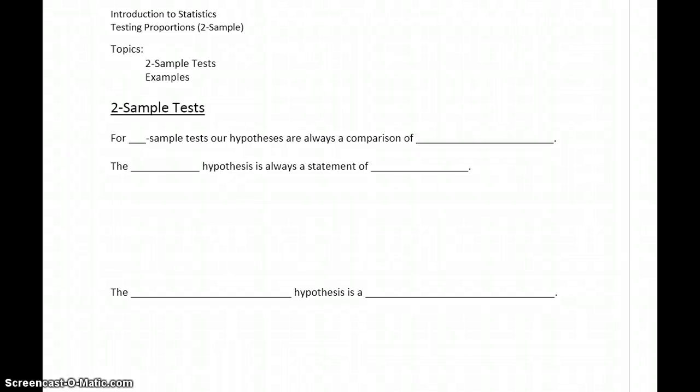We've looked at testing claims about one proportion, now we want to expand on that to test claims about two proportions. For the most part, our process is going to remain very similar to what we did with one sample tests, but there will be some changes whenever we consider two sample tests.